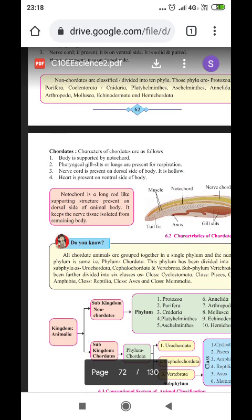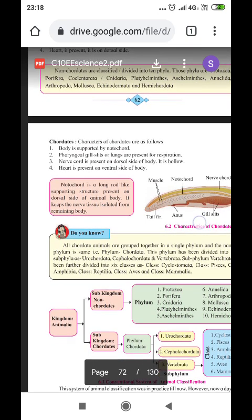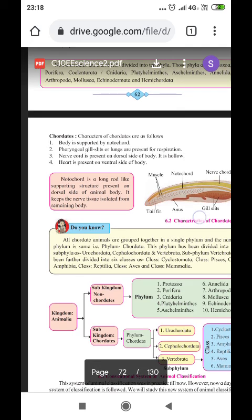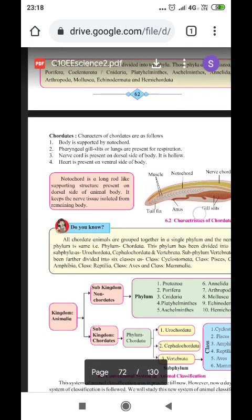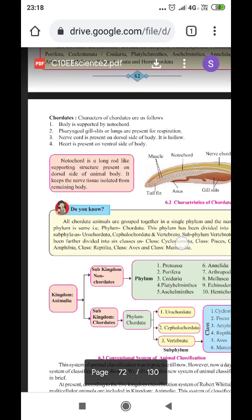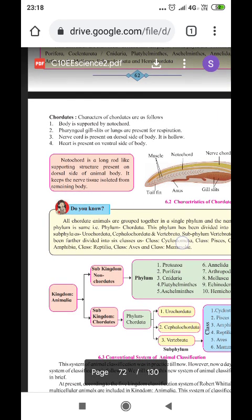Pharyngeal gill slits or lungs are present for respiration. Then, nerve cord is present on the dorsal side of the body. It is hollow. Heart, if present, it is on the ventral side. Ventral means in the front side of the body.